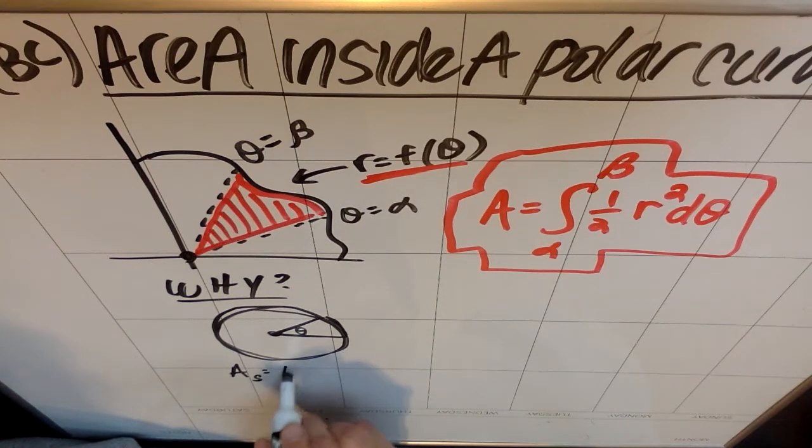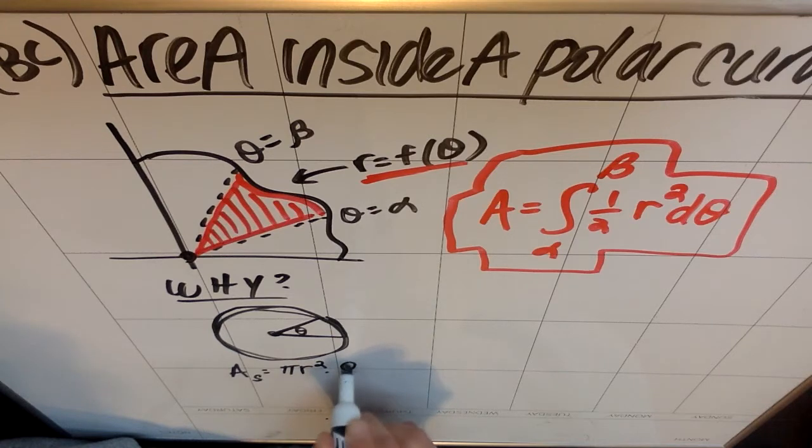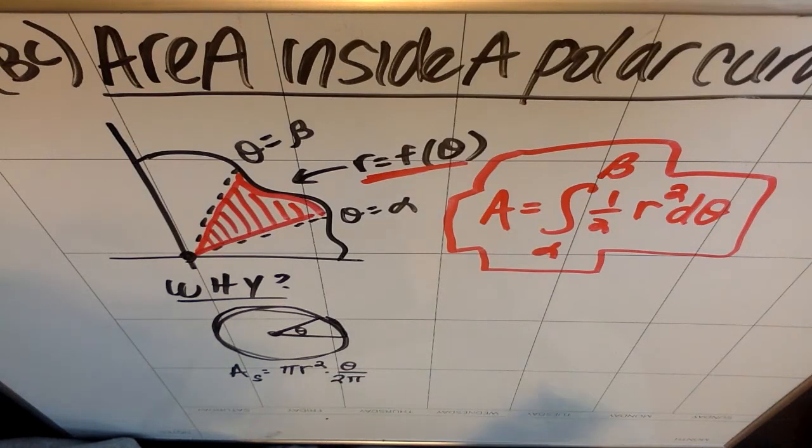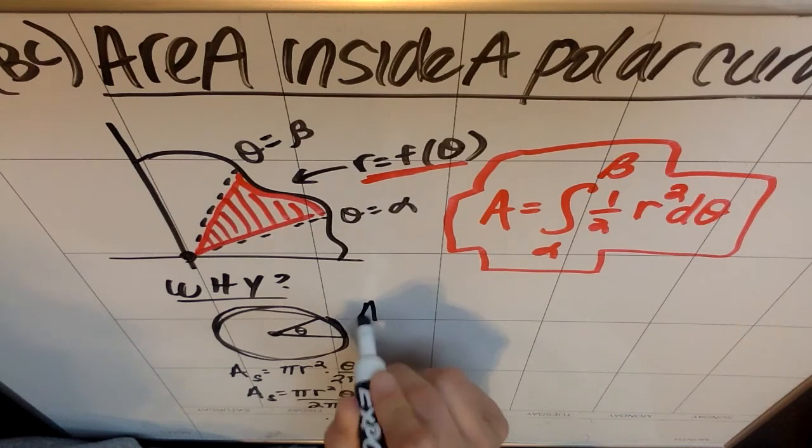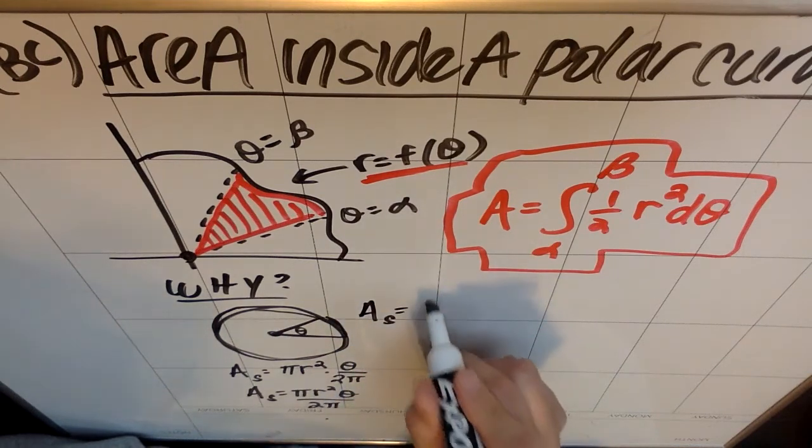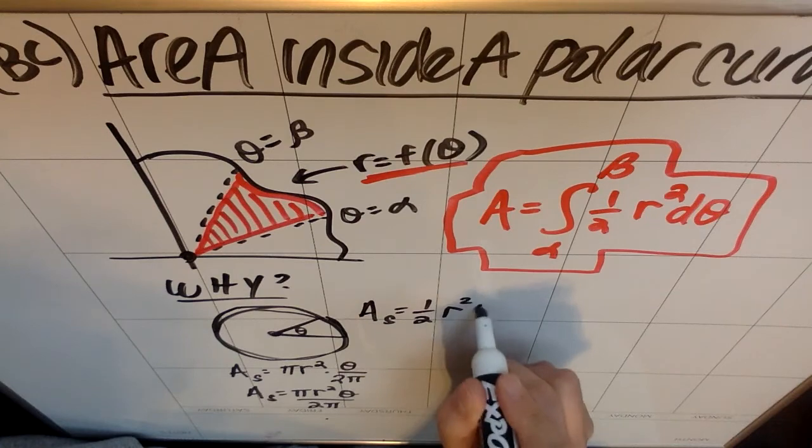It would be pi r squared, because that's the area of the whole circle, times whatever percentage of the circle I was talking about, which since I'm in radians, would be theta over two pi. So the area of this sector would be pi r squared theta all over two pi, which simplifies to the area of the sector being one half r squared theta.